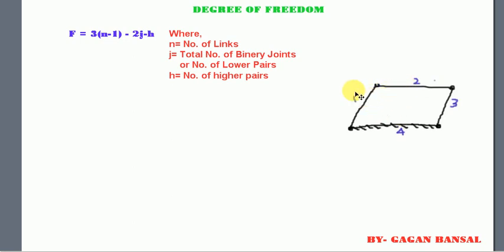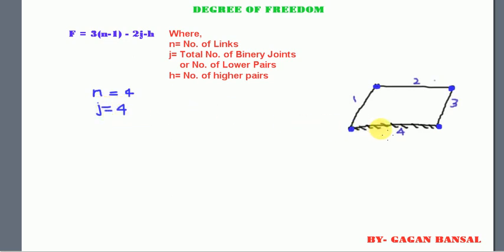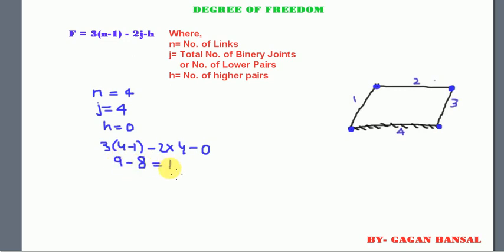Now let's deal with some problems related to degrees of freedom. Suppose we have a planar mechanism with four links: one, two, three, and four. Total number of links equals four. Number of binary joints or lower pairs are four, so j equals four. Total number of higher pairs equals zero. So F = 3(4−1) − 2(4) − 0 = 9 − 8 = 1. This given mechanism has degree of freedom equal to one.